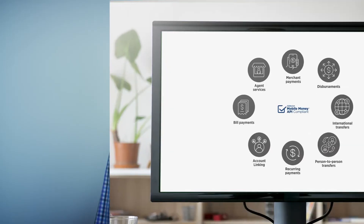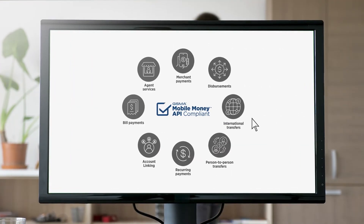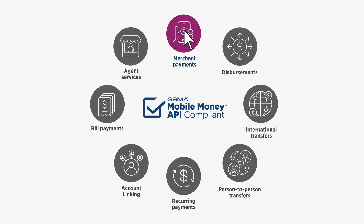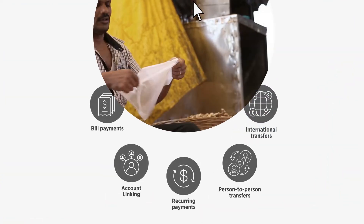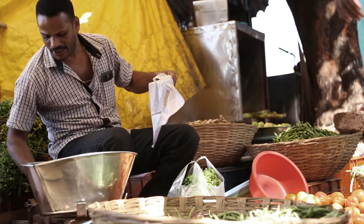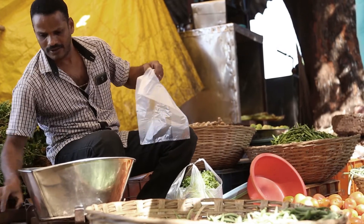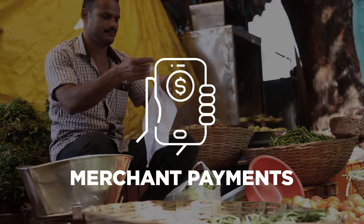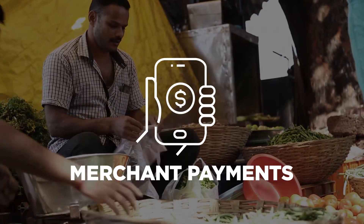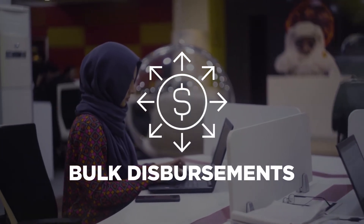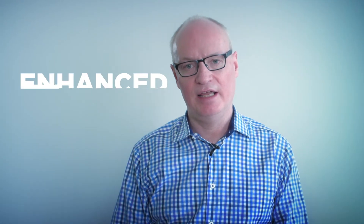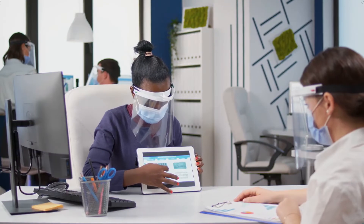This API quality assurance service will support each mobile use case separately, allowing providers to choose the use case they would like to verify — merchant payments, for example, or bulk disbursements. API providers who can demonstrate compliance will enjoy enhanced trust in their solutions.